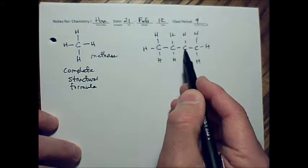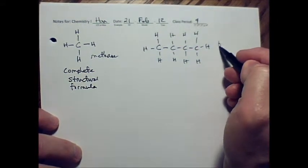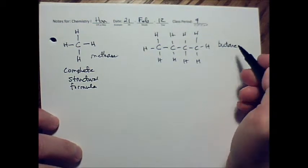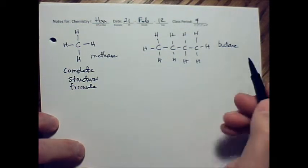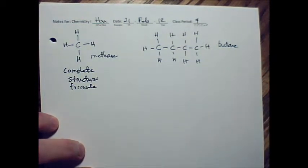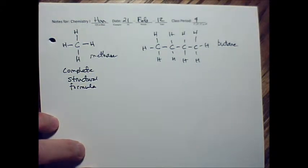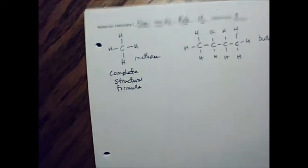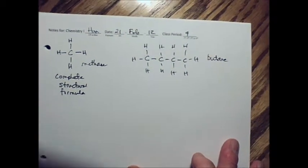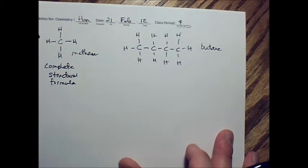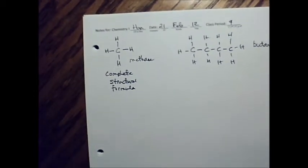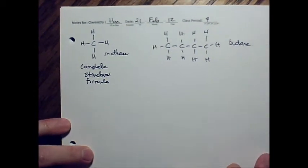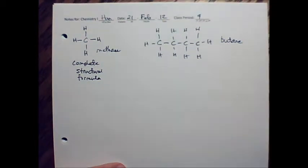So this would be meth, eth, prop, butane. Butane. All single bonds, and that's what the suffix means. Why do you call it ane? Ane is the suffix that means only single bonds between carbons. Only single bonds between carbons.